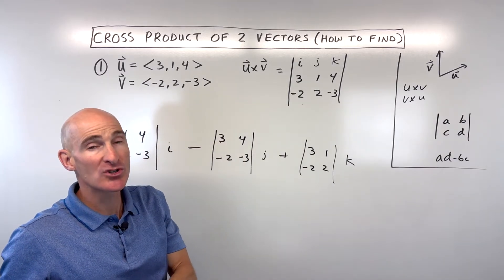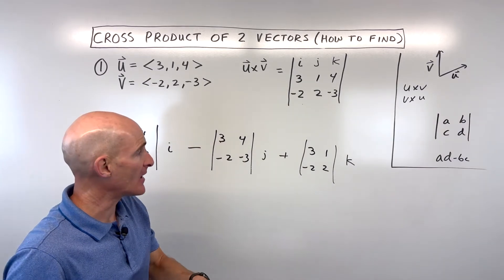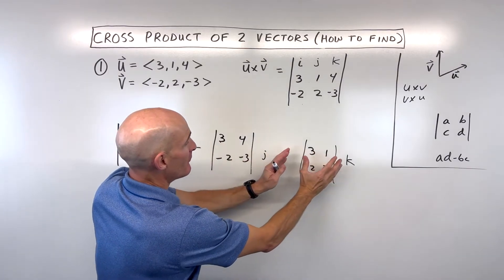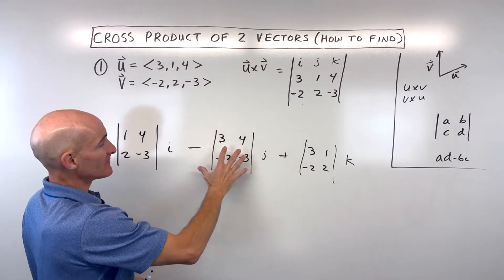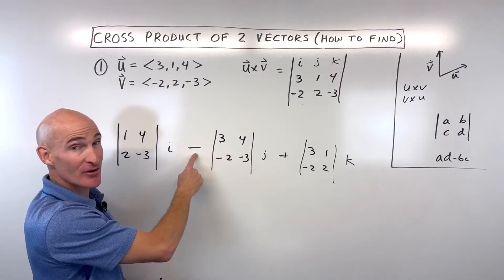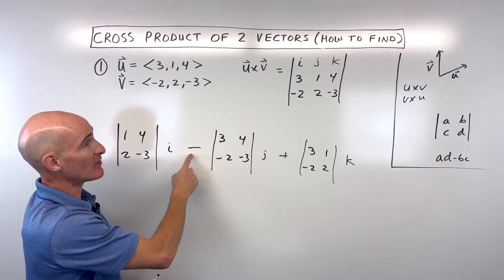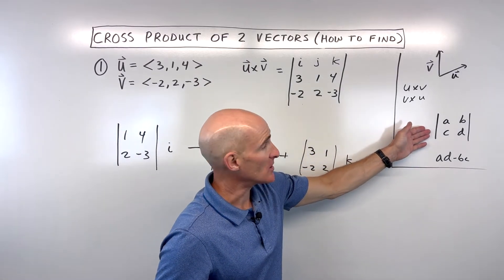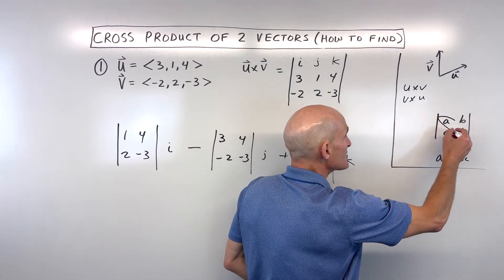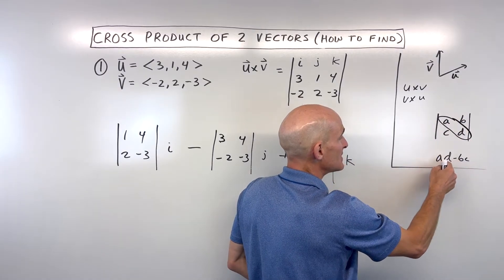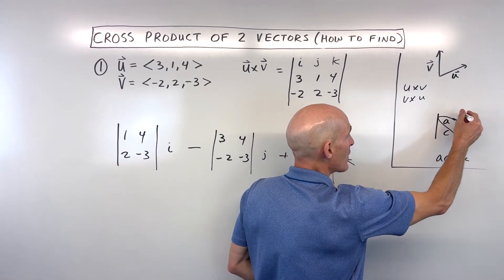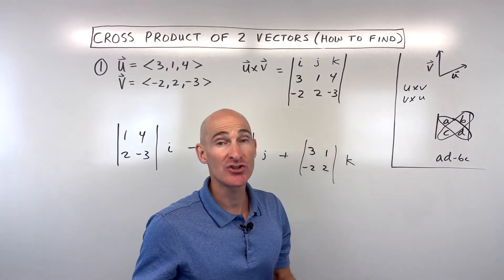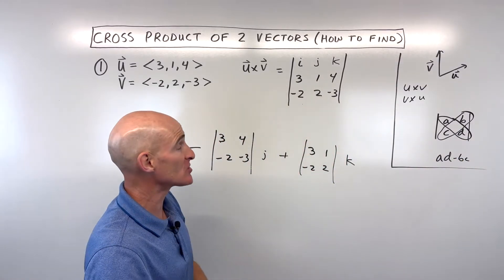Now where students sometimes go a little bit off track is the sign pattern — it's positive, negative, positive. So this middle one you're going to be multiplying by a negative. Students sometimes forget this step. When you take the determinant of a two-by-two matrix, you take the product of this diagonal A times D, minus the product of this diagonal B times C — that gives you the determinant of a two-by-two matrix.